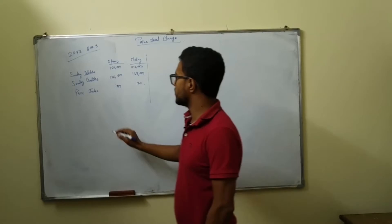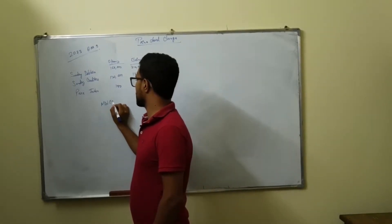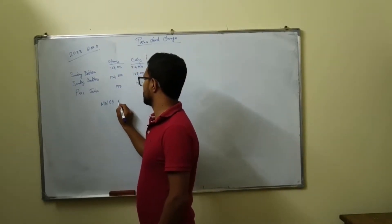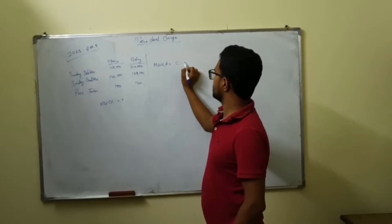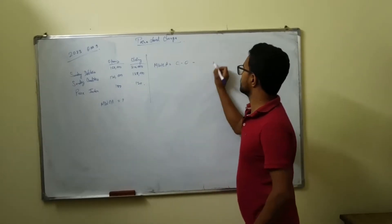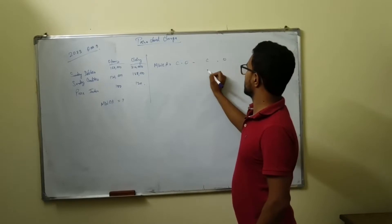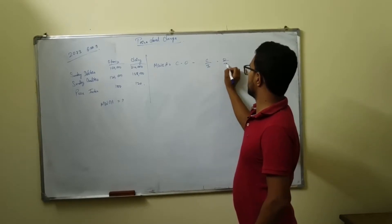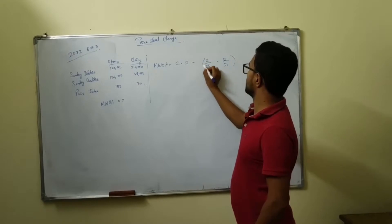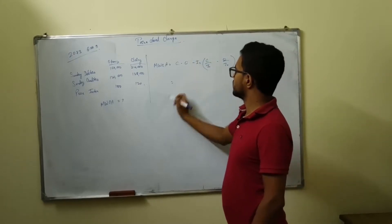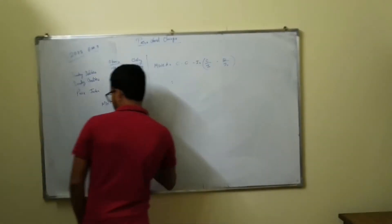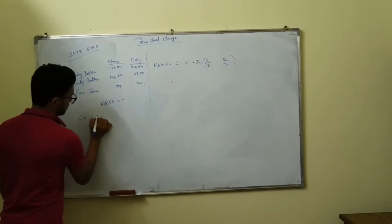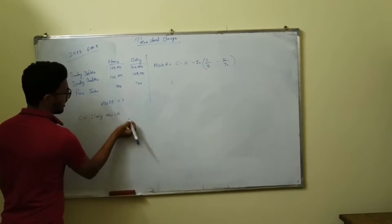We know MWCA is equal to C minus O, divided by IC divided by IO, multiplied by IA. In your case, C is closing monetary working capital investment.